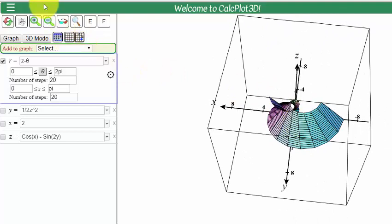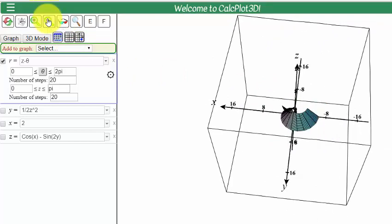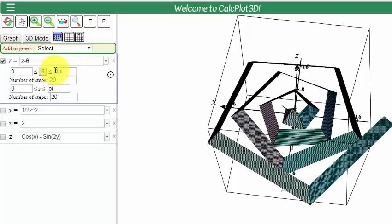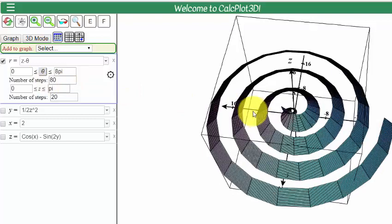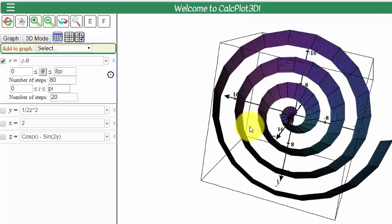I can zoom out, and maybe let theta, instead of going from 0 to 2 pi, how about 0 to 8 pi? There we are, and let's go to number of steps instead of 20, how about 80? And then we'll see it a lot smoother, and now we can really see how this graph works.